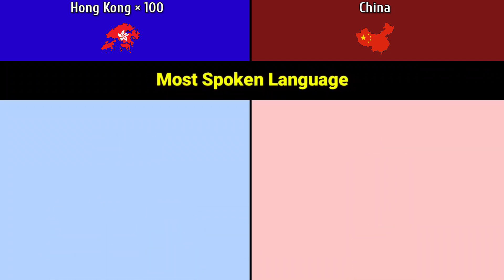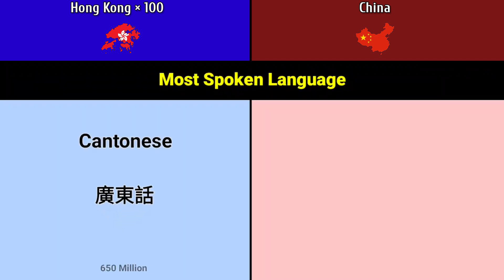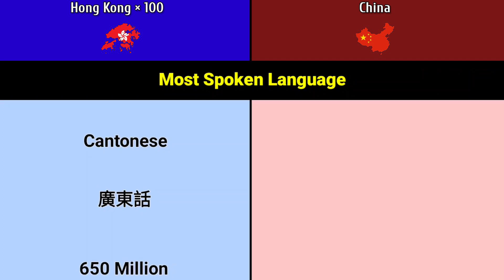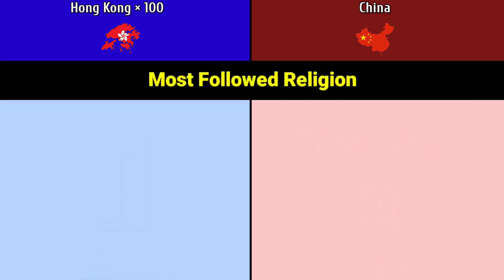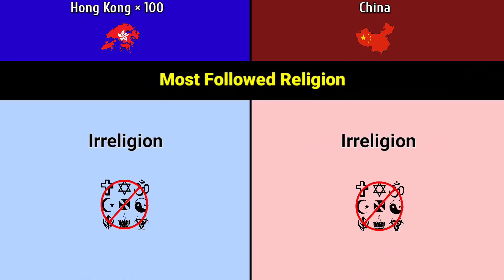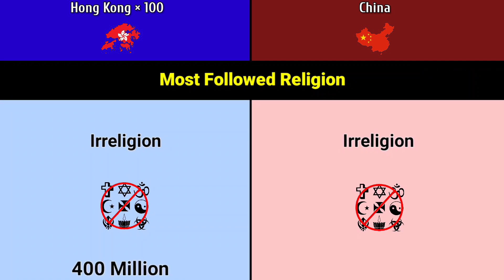Most spoken language: Hong Kong Cantonese 650 million, China Mandarin Chinese 1.12 billion. Most followed religion: irreligion — Hong Kong 400 million and China 780 million.